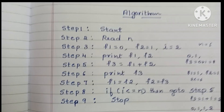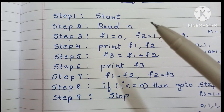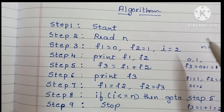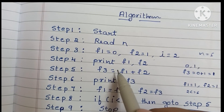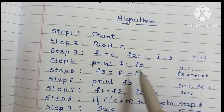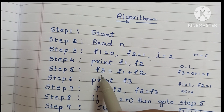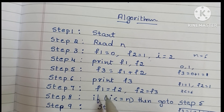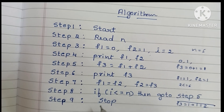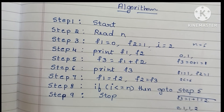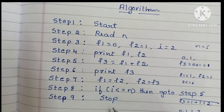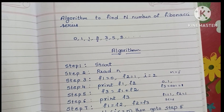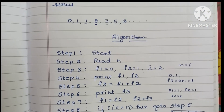So to summarize, this is the algorithm to find N number of Fibonacci series. Step 1: start. Step 2: read N. Step 3: declare f1 equals 0, f2 equals 1, i equals 2. Step 4: print f1 and f2. Step 5: f3 equals f1 plus f2. Step 6: print f3. Step 7: interchange — f1 equals f2, f2 equals f3. Step 8: if i is less than or equal to N, go to Step 5; otherwise stop. If you like my video, please like and subscribe.